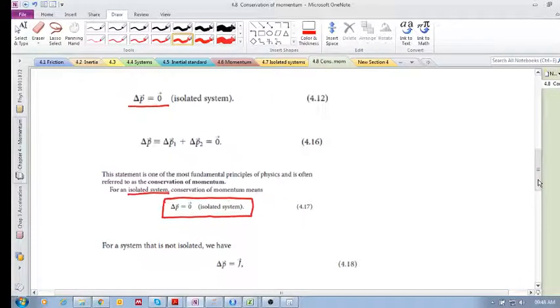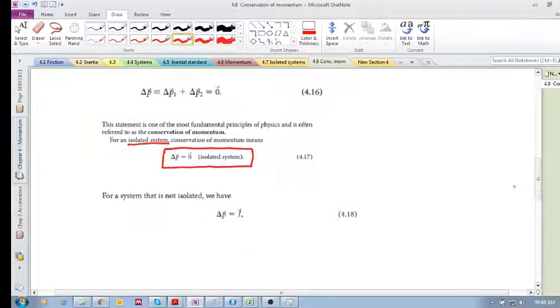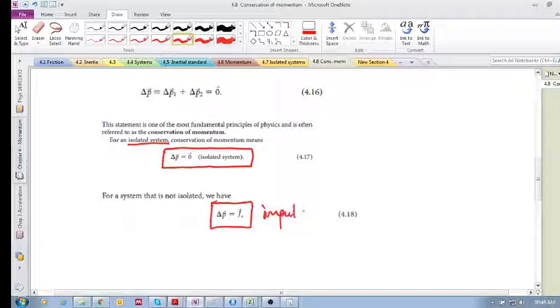Now, if you've got momentum transfer across the boundary, we do not have an isolated system, and so we have impulse.